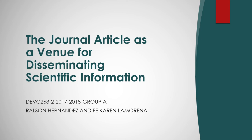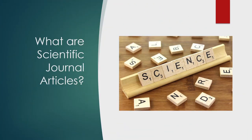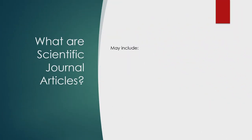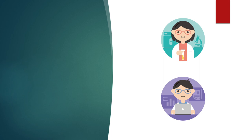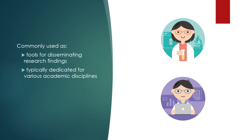Let's start off by defining the term journal article or scientific journal article. According to the American Psychological Association, scientific journal articles are those articles that may include original research, reanalysis of research, reviews of literature in a specific area, proposals of new but untested theories, or opinion pieces. Scientific journals are mainly used by authors, scientists, or researchers as tools for disseminating research findings.